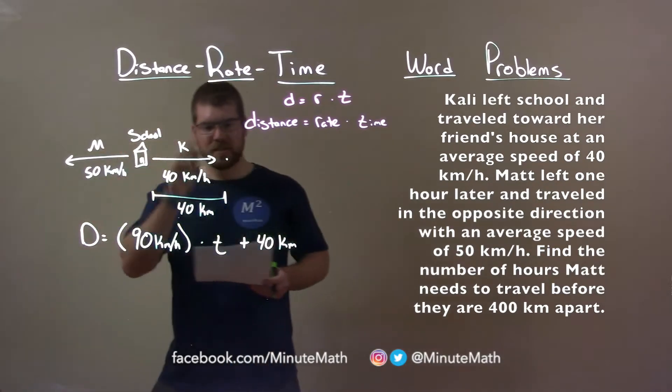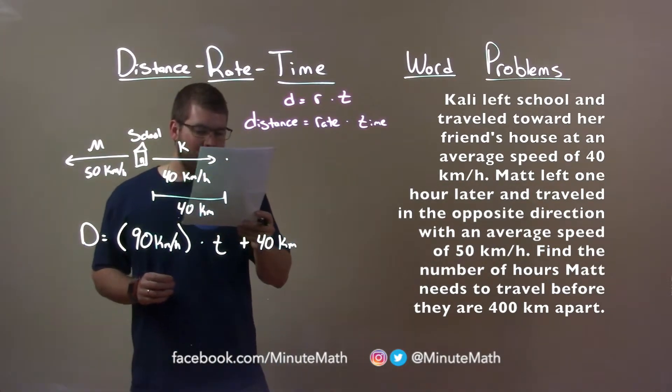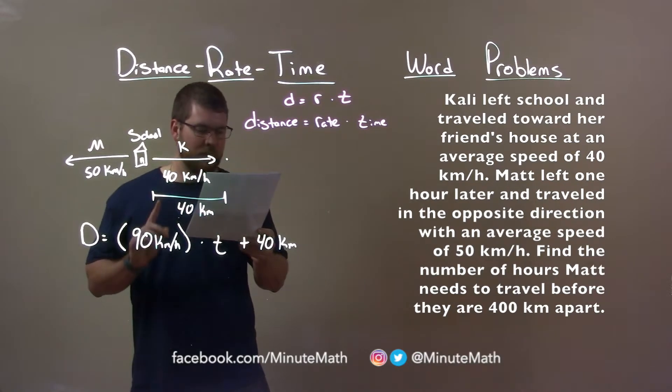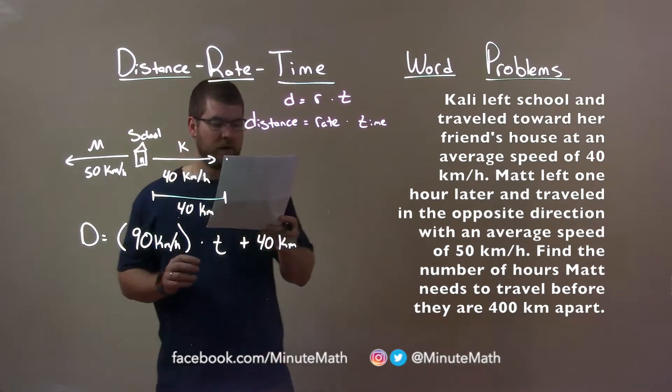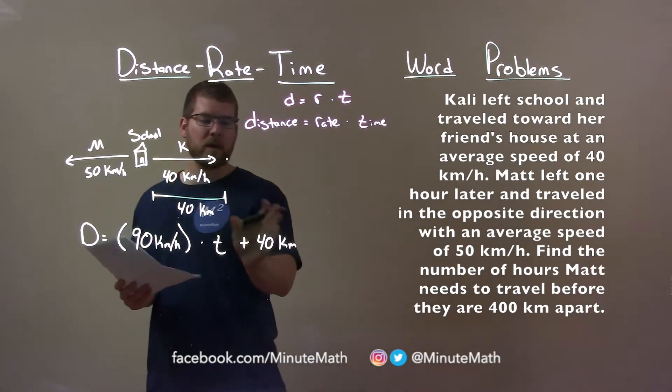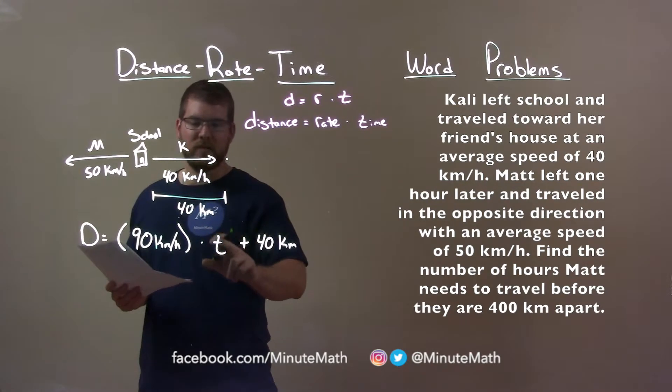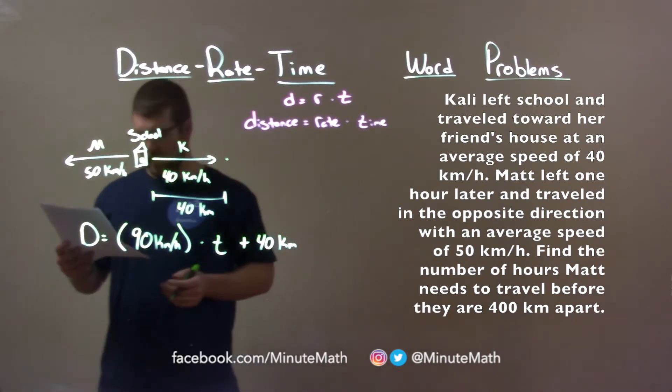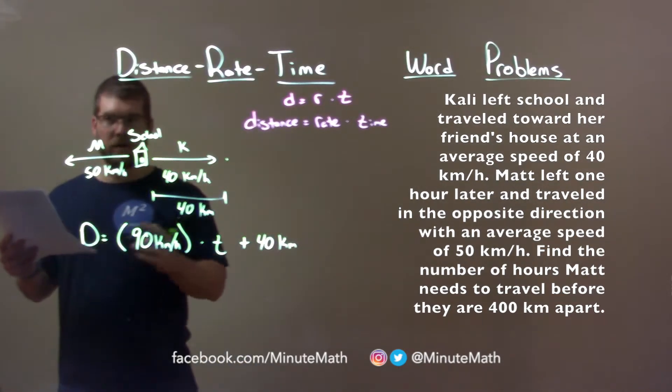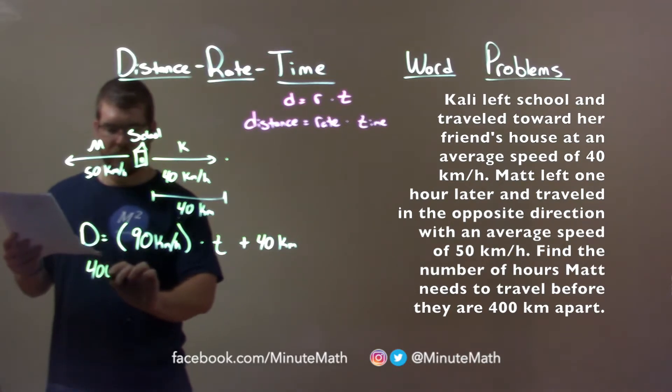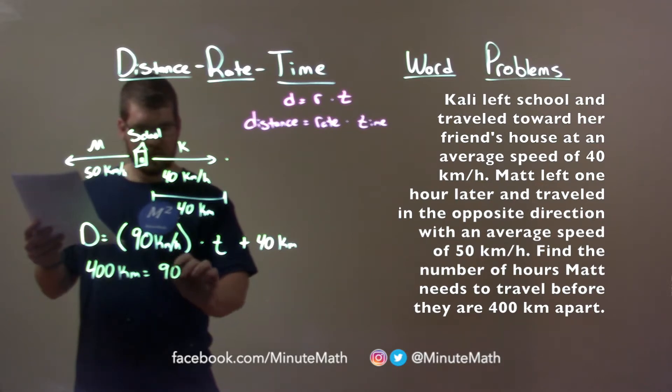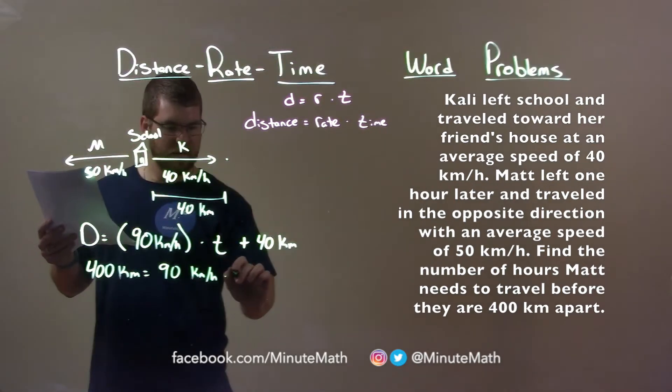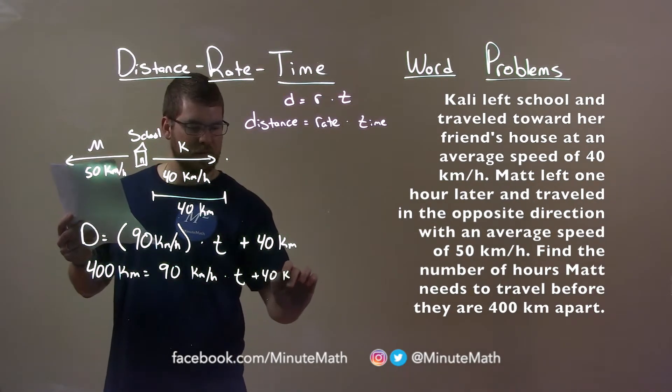Now the key here is the question. T is representing the number of hours Matt needs to travel before they are 400 kilometers apart. So we have already included the one hour Cali travels right here, but this T is only representing the time Matt traveled, okay? So now we have an equation, and well, distance, that's going to be 400, that's the goal, right? So 400 kilometers equals 90 kilometers per hour times T plus 40 kilometers, okay?